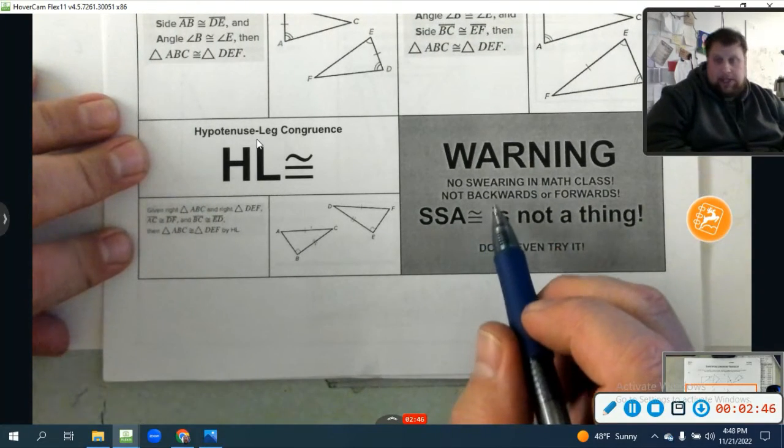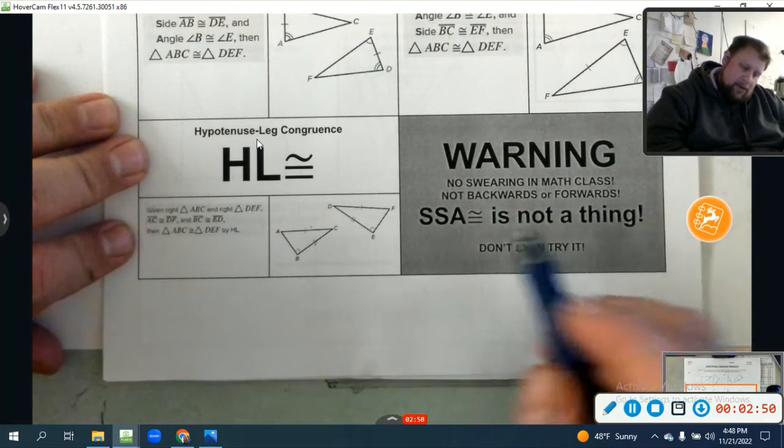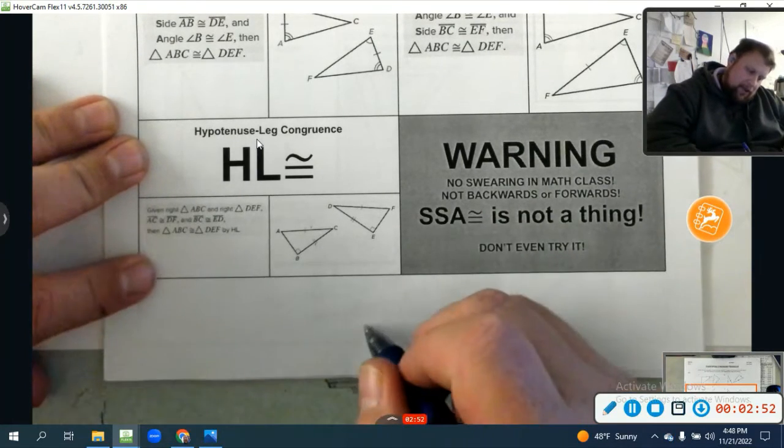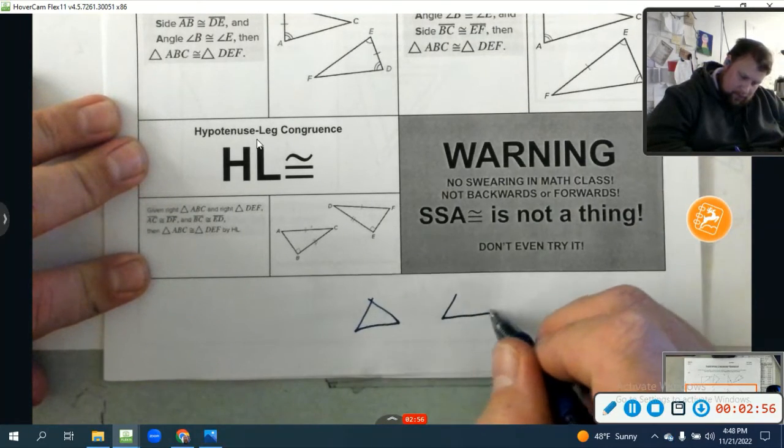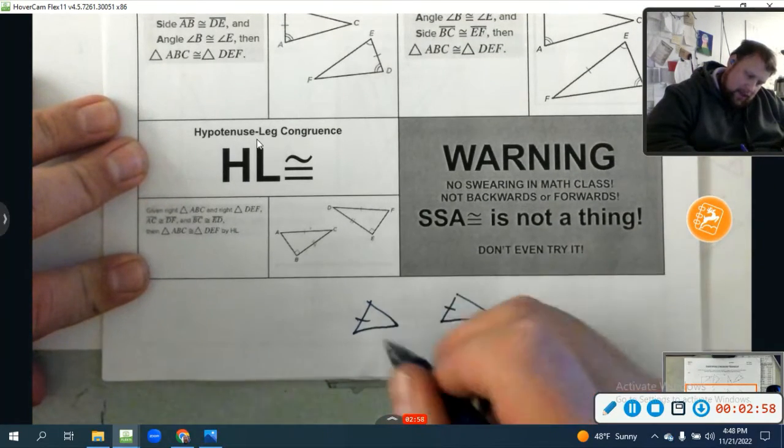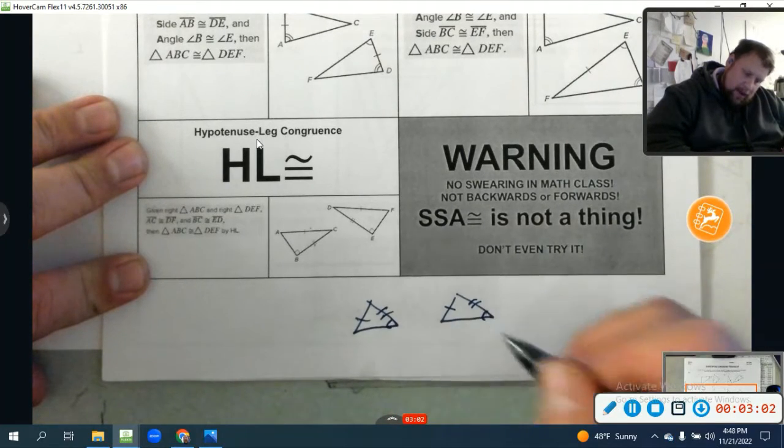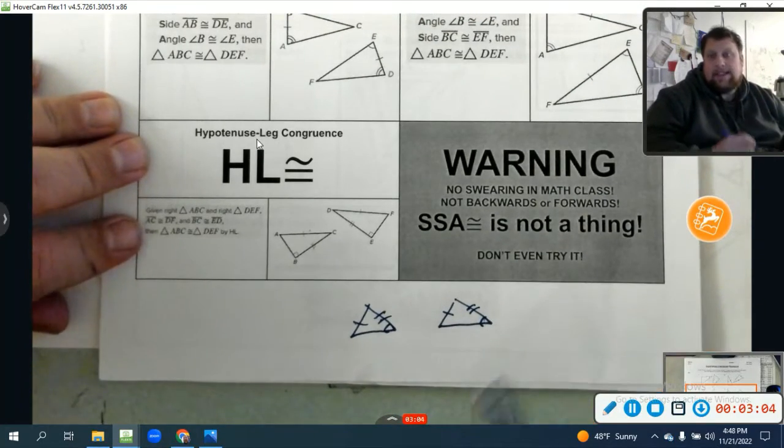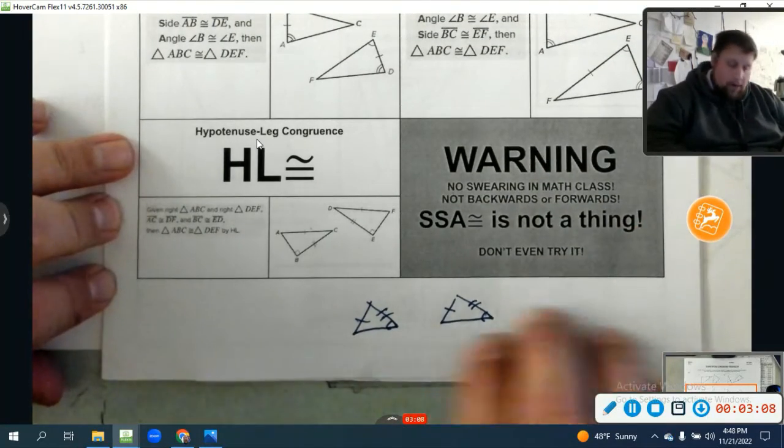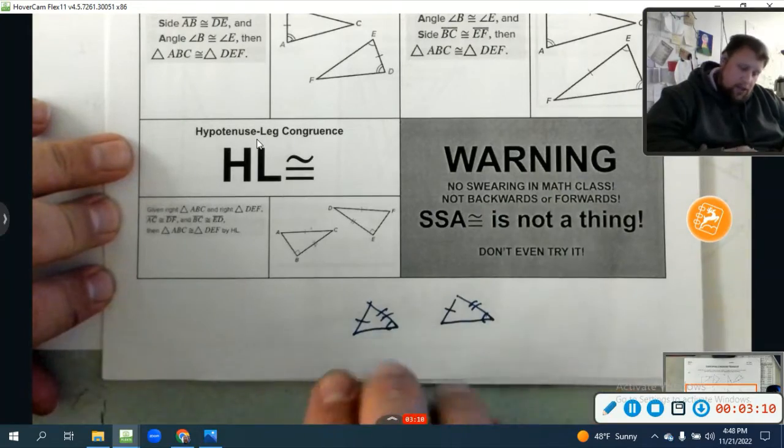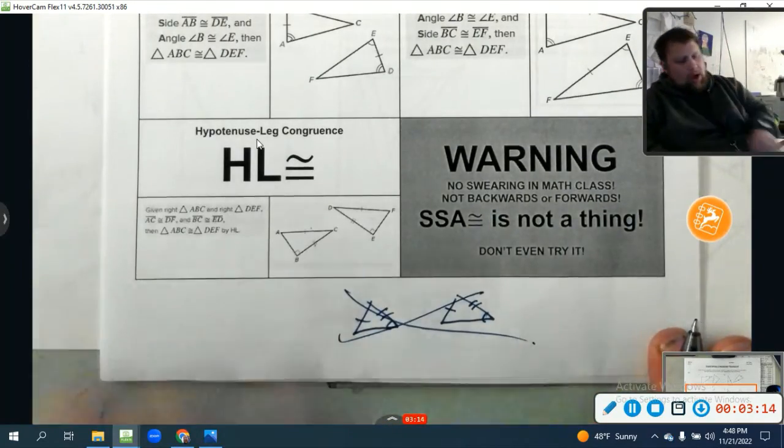And let's laugh at this. I'll let you guys use your imagination backwards. No swearing in math class, not backwards or forwards. So side-side-angle, two triangles, and these sides are equal, these sides are equal, and then this angle is equal - the non-included angle. That side-side-angle, or if you say it backwards, is something different, doesn't work. This doesn't work. So just know this is not a congruency. Boom, doesn't work.